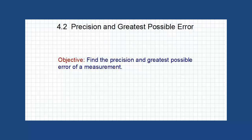Hello there, welcome to lesson 4.2: Precision and Greatest Possible Error. Our objective for this lesson is to find the precision and the greatest possible error of a measurement.